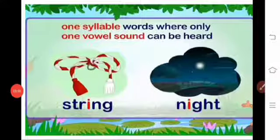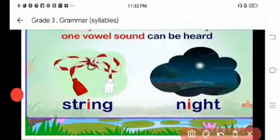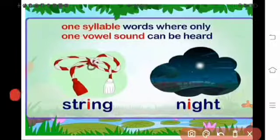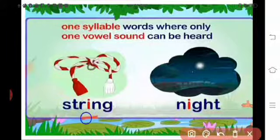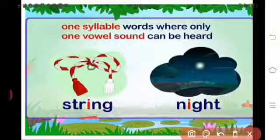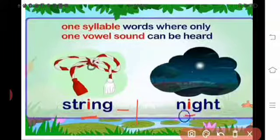One syllable words have only one vowel sound. Here, see 'string': S-T-R-I-N-G. Only one vowel letter — I — so it is a one-syllable word. Next, 'night': N-I-G-H-T. Here also only one vowel sound — I — so it is also a one-syllable word.